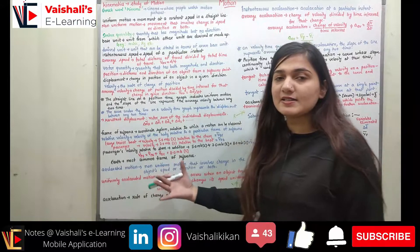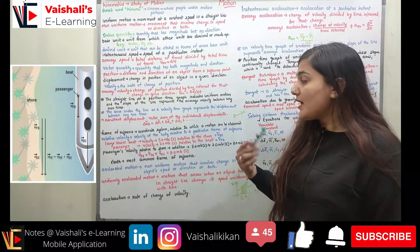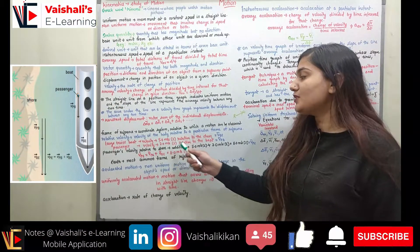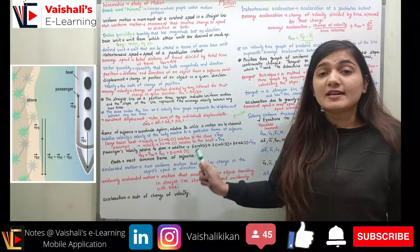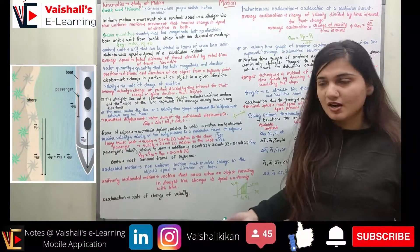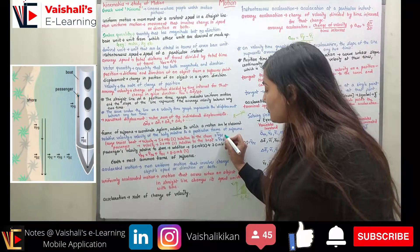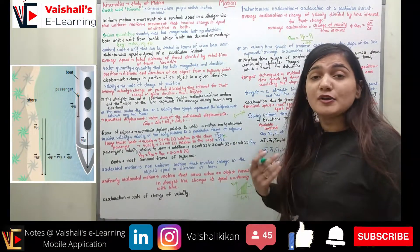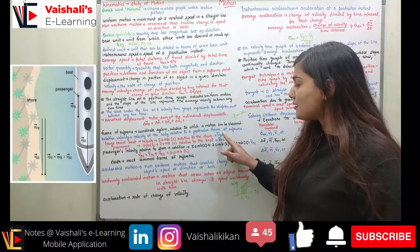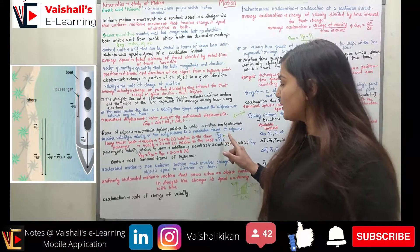To understand relative velocity, consider a large cruise boat moving at 5 m/s south relative to the shore — the frame of reference is Earth, so this is V_BE (velocity of boat with respect to Earth). A passenger on the boat jogs at 3 m/s south relative to the boat — this is V_PB (velocity of passenger with respect to boat).